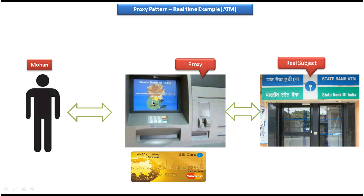So instead of going to the bank, Mohan can go to the ATM and withdraw the money. Here the bank is the real subject and the ATM is the proxy — this is the best example of the proxy design pattern. I have also created proxy design pattern class diagram, sequence diagram, and implementation video tutorials. Please log into my channel and watch those for more details. Thanks for watching, bye.